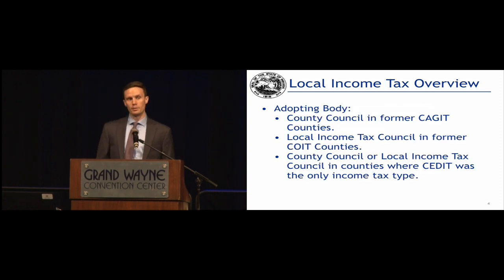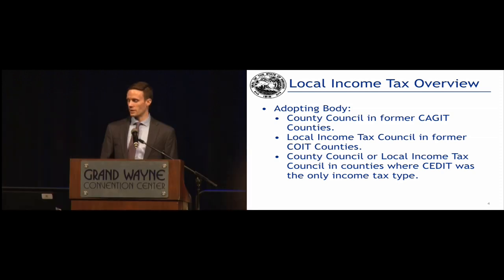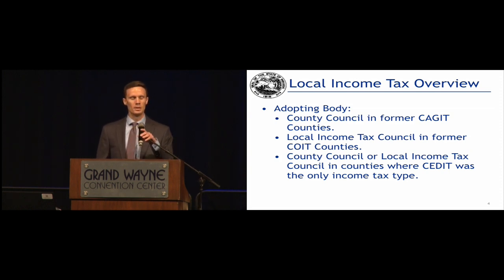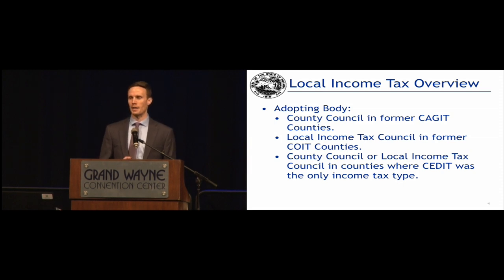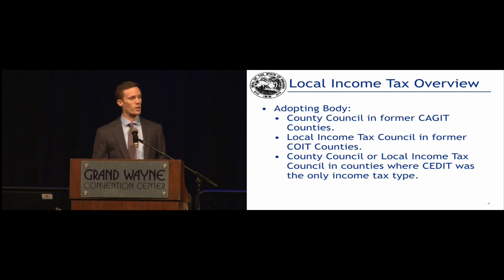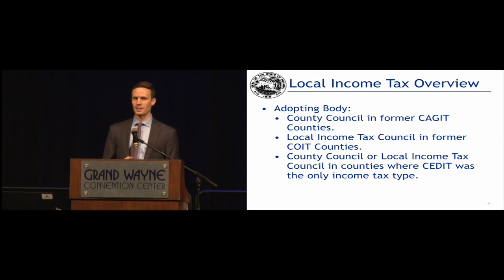The adopting body for income taxes is not the same for all counties across the state. In certain counties it's going to be the county council, and in certain counties the adopting body is going to be what's known as the local income tax council. If you're from a former CAGIT county, your adopting body is the county council. If you are from a former COIT county, your adopting body is the local income tax council.